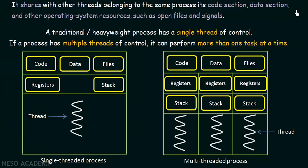Let us try to understand the concept of threads using two diagrams. In the first diagram, it is a single-threaded process, referred to as a traditional or heavyweight process. This whole block is considered as a process and this process contains only one thread. This is the code section, the data section, the files, the registers, and the stack belonging to this process, and there is only one thread.